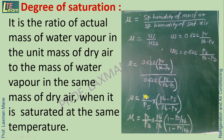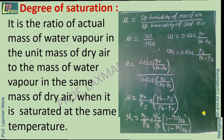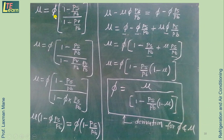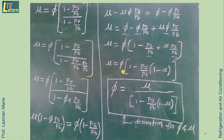Substituting the expressions for W and WS and simplifying by taking PV common from the numerator and PS common from the denominator, we obtain the relation between relative humidity and degree of saturation: mu = phi × (1 − PS/PB) / (1 − phi × PS/PB), where PV/PS equals phi. Taking phi common and arranging the terms on one side gives the final relation between relative humidity phi and degree of saturation mu.